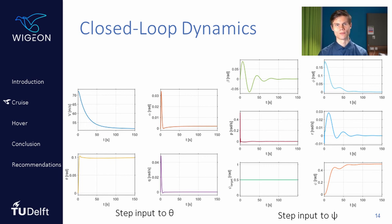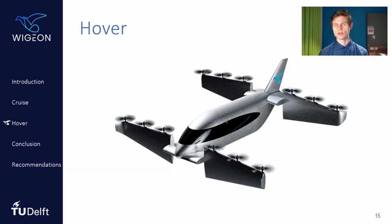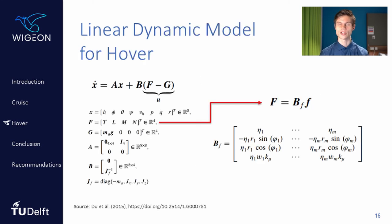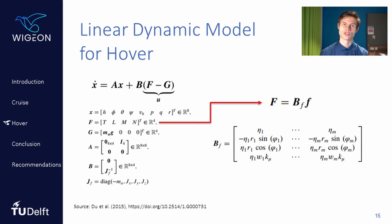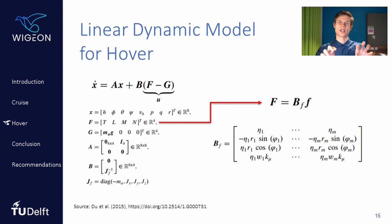This closes our discussion on cruise. Now let's move on to the second flight phase we consider, which is hover. Here it is much more difficult to achieve open-loop stability, so we focus our attention more on controllability. We were inspired by a paper by Du et al., who use a simple linear dynamic model for hover represented as a state-space system. The vector capital F contains the control forces and moments we can apply, represented as a matrix-vector product where the matrix contains information about the location of the rotors, and the vector small f contains the thrust of the individual rotors.